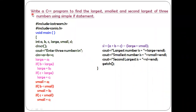Hello everyone, welcome back to the session. In today's session we will be discussing another C++ program to find the largest, smallest, and second largest of three numbers using the concept of simple if statement. Simple if is also called as a one-way branch. Let us have a look into the C++ program.